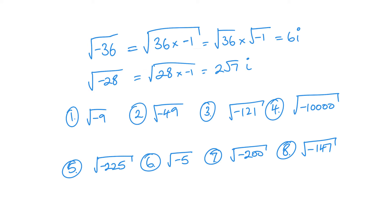I'm going to go through the answers, just put them in. So we've got root 3i, 7i, 11i and 100i. And we've got 15i, root 5i, 10i, 10 root 2i, and 7 root 3i.